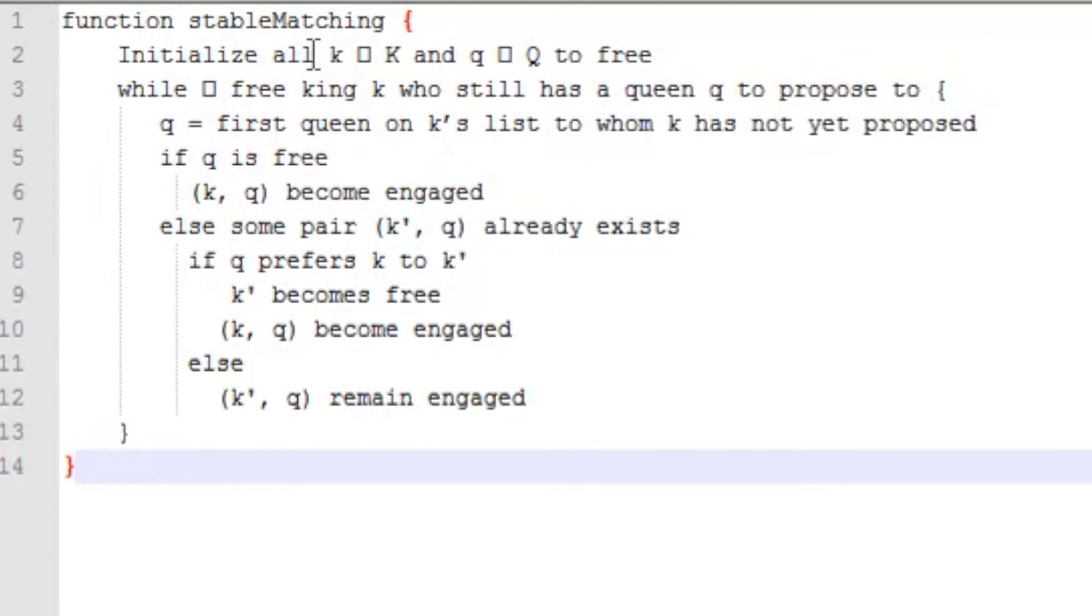As you can see, I have initialized all the kings to one group and all the queens to one group. So if there is a king who is not engaged to any queen, and Q is the king's top preference who the king has not yet proposed to, then if the queen is not engaged to anyone, the king and the queen become engaged. However, if another pair already exists, but the queen prefers this king to K' the older king, then she breaks off the engagement with K', and K and Q become engaged. However, if she is happy with the current engagement, then they remain engaged. This process repeats until each pair are matched together in a stable arrangement.